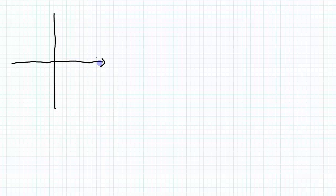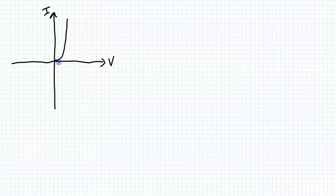To start off with, let's look at the characteristic curve of a regular diode. The characteristic curve plots voltage and current — current on the vertical axis and voltage on the horizontal axis. With a regular diode, if you start applying zero voltage and then increase it, at some point it's going to turn on — current will start to flow. There's this knee where the current starts to turn on, and it doesn't require much more voltage change to generate a very large change in current.